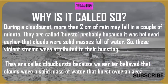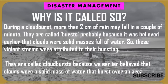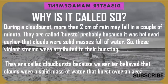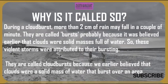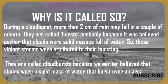During a cloudburst, more than two centimeters of rain may fall in just a couple of minutes. They are called 'burst' probably because it was believed earlier that clouds were solid masses full of water, and these violent storms were attributed to their bursting. They are called cloudbursts because people earlier believed clouds were solid masses of water that burst over an area.